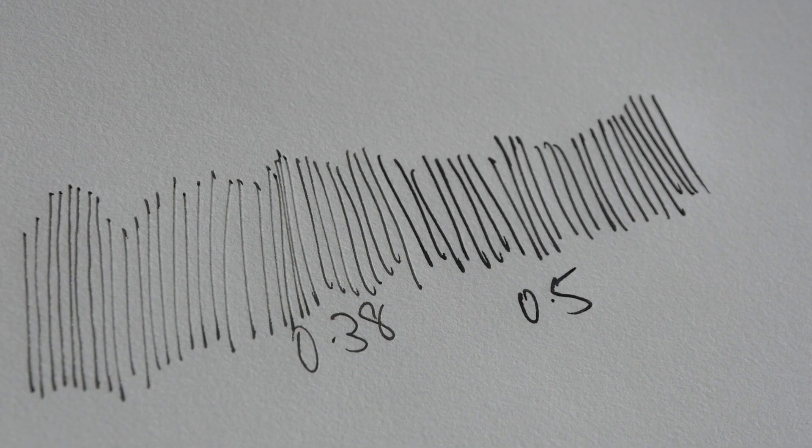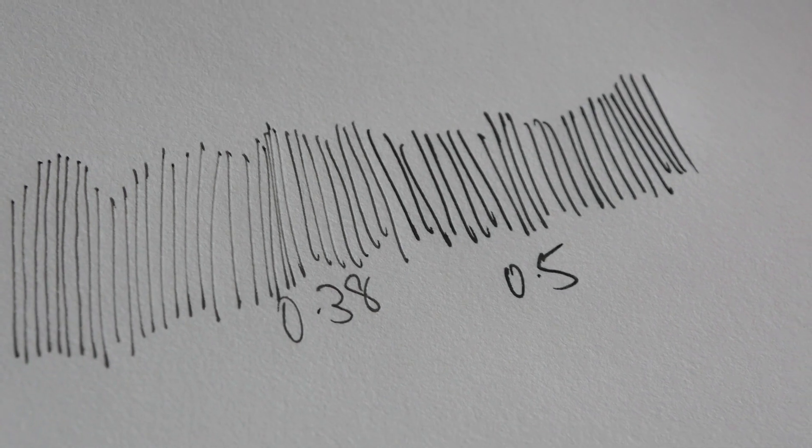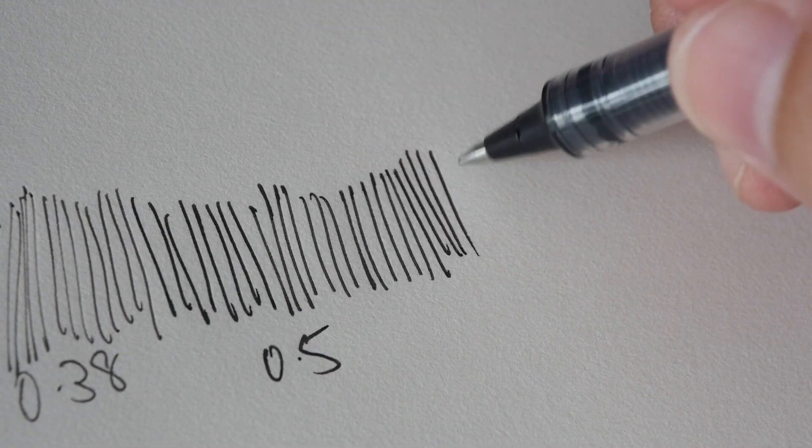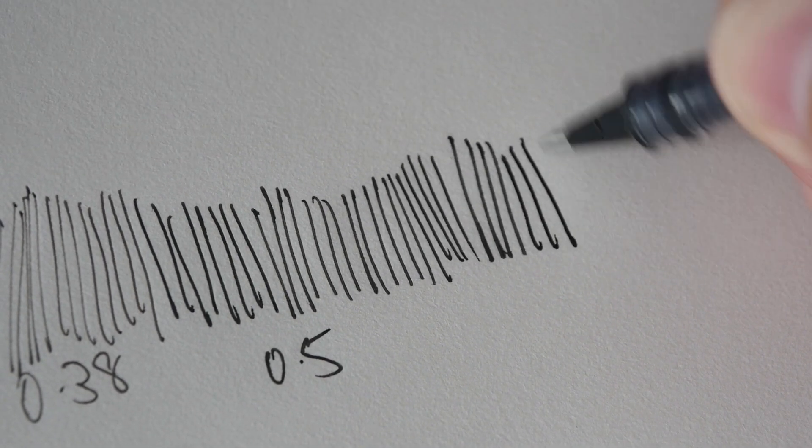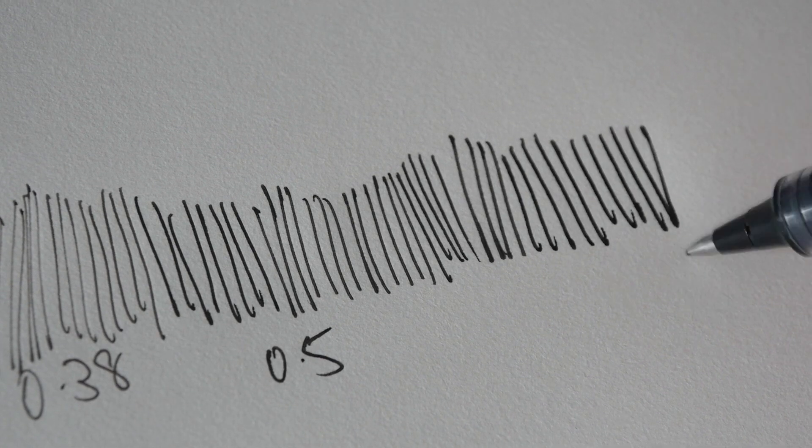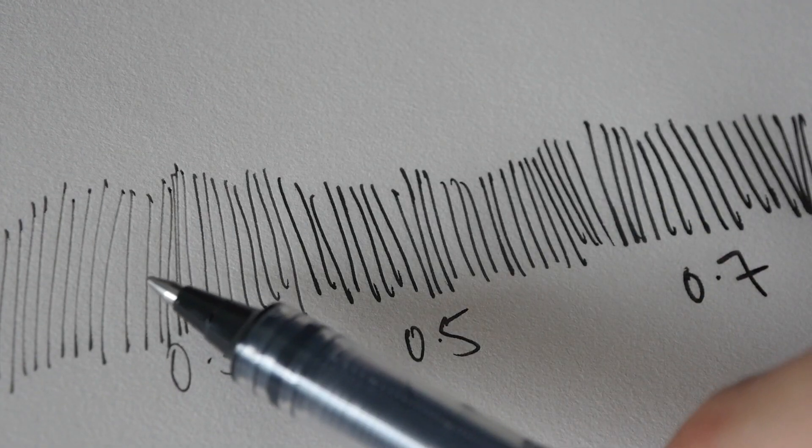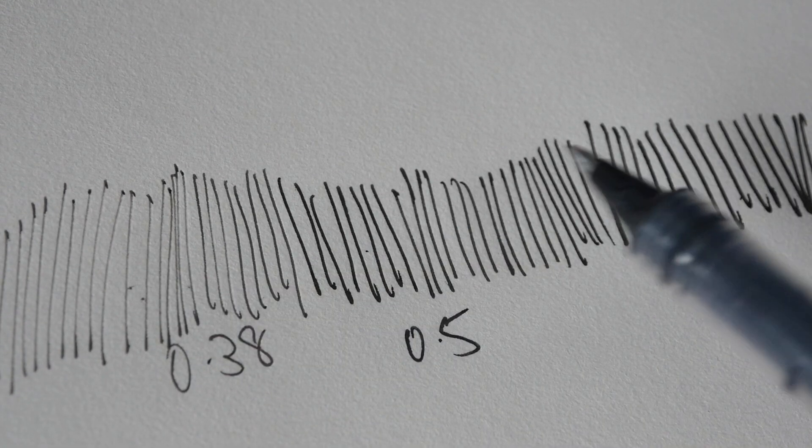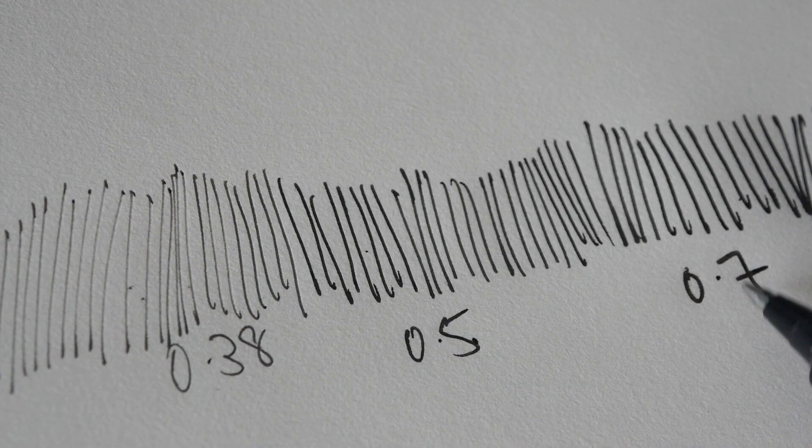And finally let me switch over to the fine which is 0.7. This is actually the line width that I use most often because I like thicker lines. You can see also that it's much thicker. The line width difference is quite slight. There's only a slight difference when you jump from 0.38 to 0.5 to 0.7.